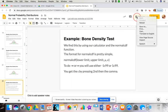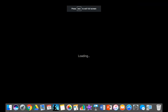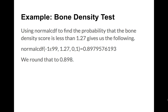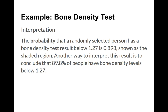We get that the probability that a randomly selected person has a bone density score less than 1.27 is approximately 0.898. We round probabilities to three decimal places unless told otherwise. We can also interpret this as 89.8% of people have bone density levels below 1.27.